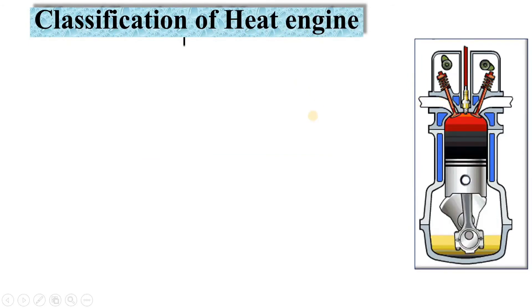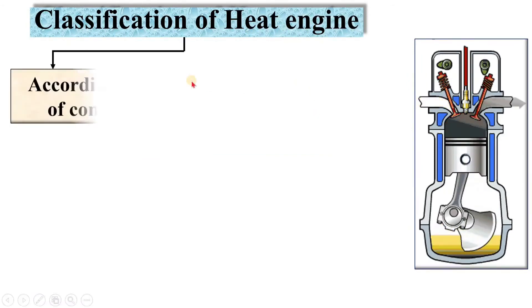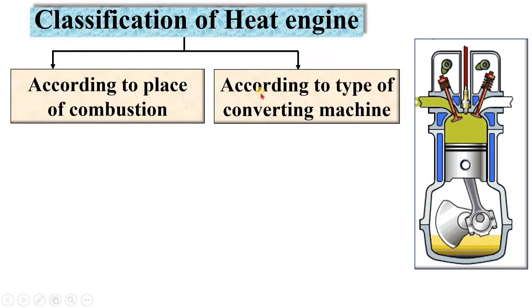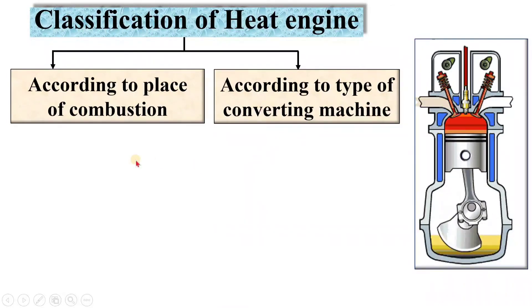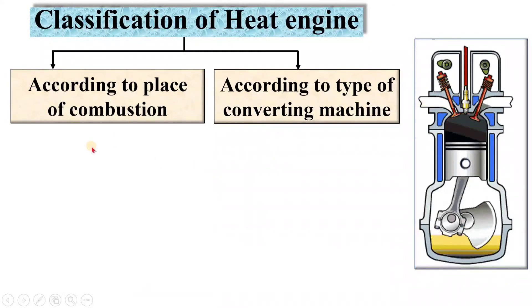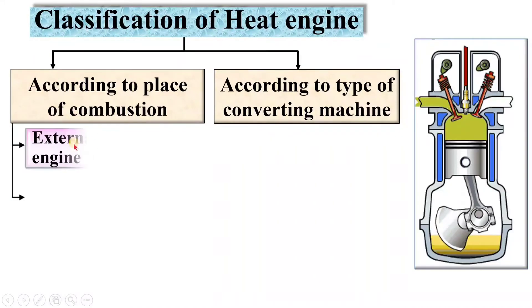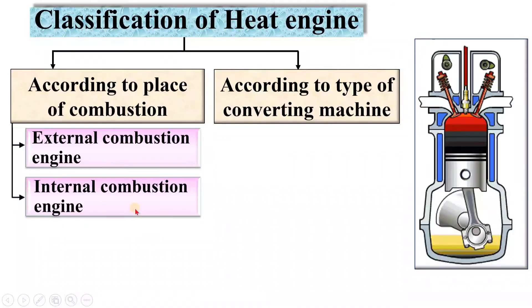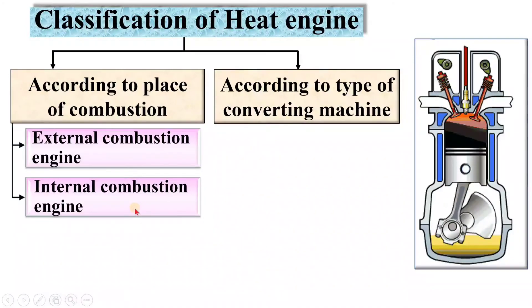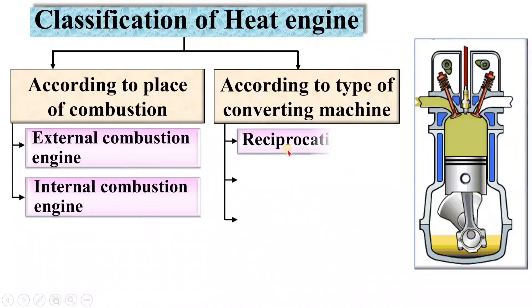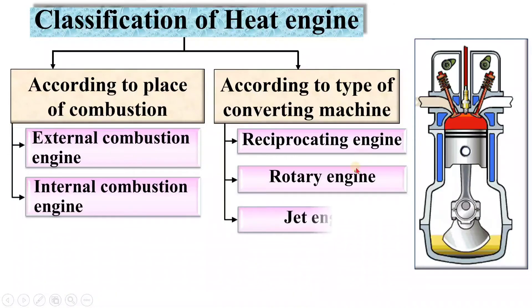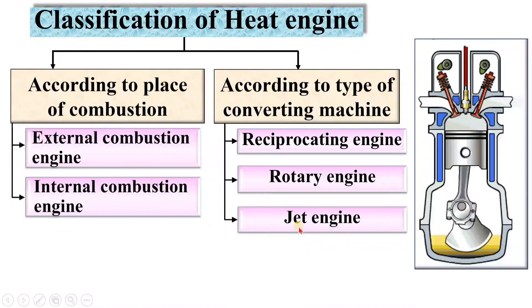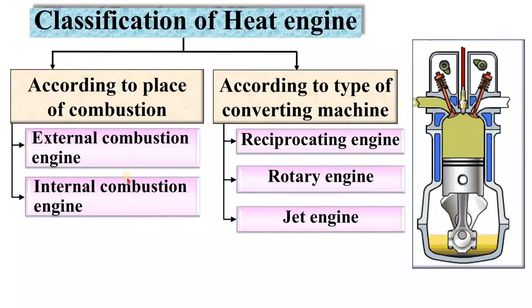Now, the classification of heat engine. Basically it is classified according to the place of combustion and according to the type of converting machine. According to the place of combustion, it is classified as external combustion engine and internal combustion engine. According to the type of converting machine, it is classified as reciprocating engine, rotary engine, and jet engine. Let's see one by one.